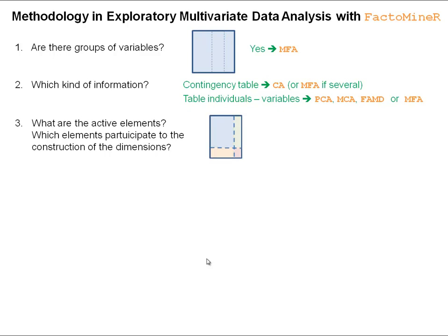We can have supplementary rows or supplementary columns if we have a contingency table, or supplementary individuals, supplementary quantitative variables, qualitative variables, or supplementary groups of variables. These are some arguments that can be used in the principal component methods with FactoMineR.